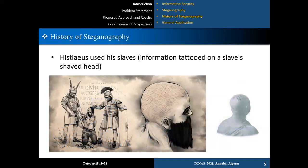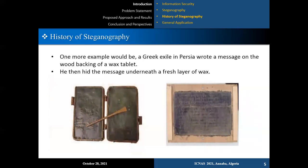Steganography has existed for a long time. In past ages, the Greek Histios used to tattoo the secret message over the skull of a slave, and when the hair was growing again, the slave would be dispatched to the destination. Also, around 1418 BC, Demerstros used a wooden wax tablet to hide the message. The secret message was written on the wood after taking off the wax, and then the wood was covered again with fresh wax.